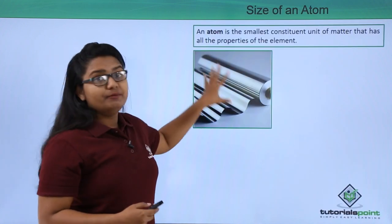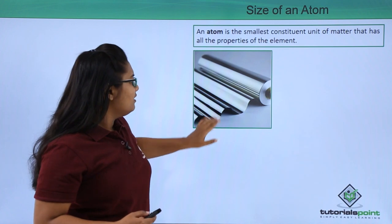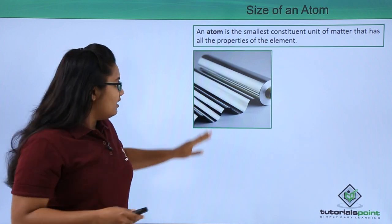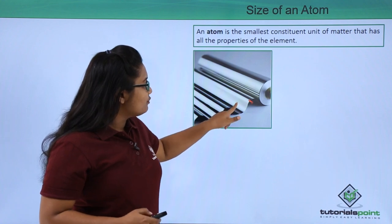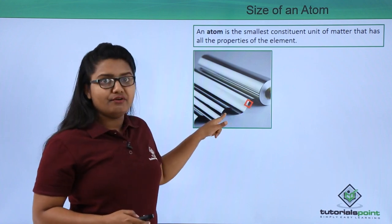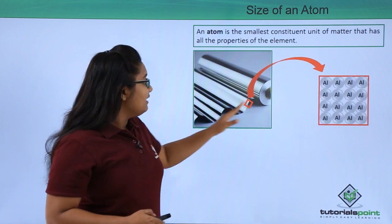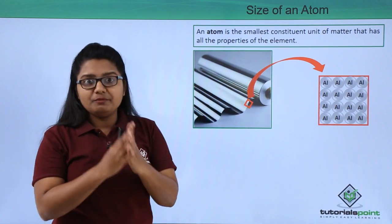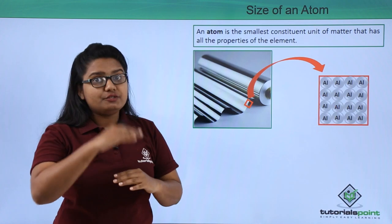Let's have the same aluminum foil. We all know how thin an aluminum foil is. Let us now zoom in this edge of this aluminum foil. This edge is also made up of a large number of aluminum atoms stacked together.